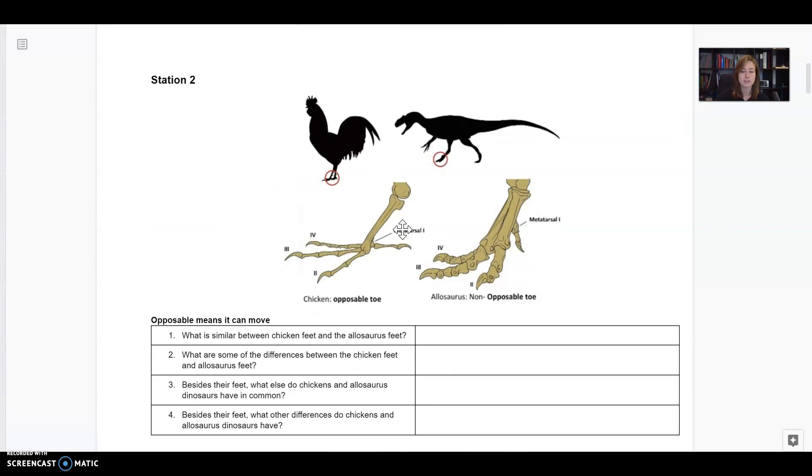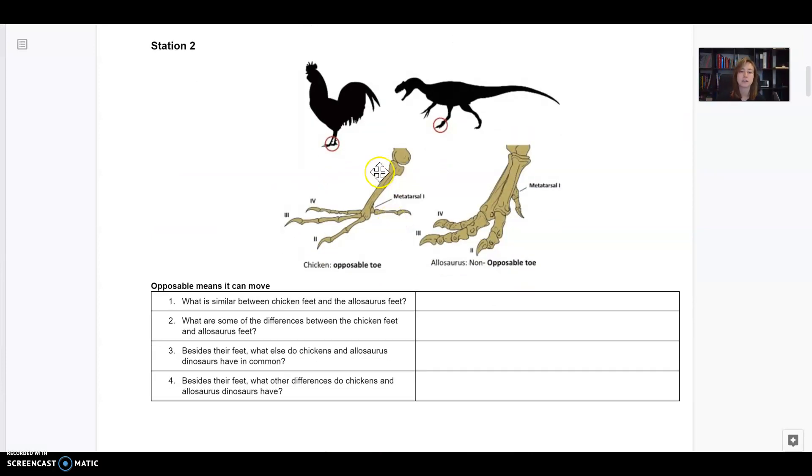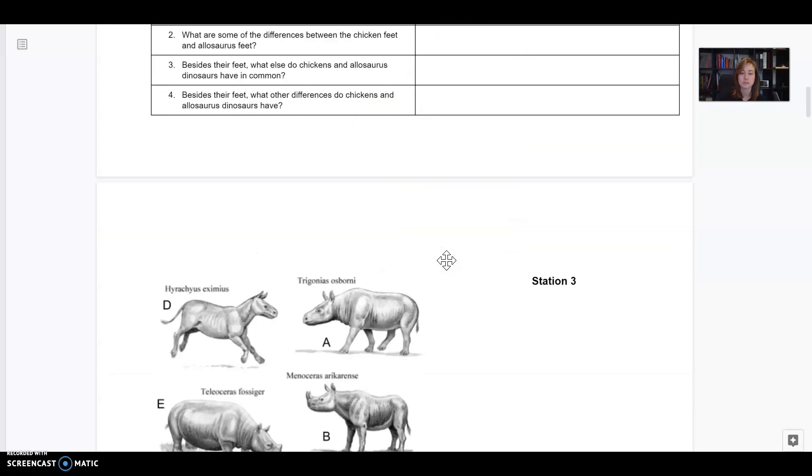Let's go on to the next station. This one shows us the foot of a chicken and the foot of an allosaurus, and birds and dinosaurs have a common ancestor as well. They're pretty closely related and we can see that in the similarities in their feet.